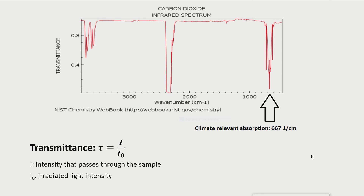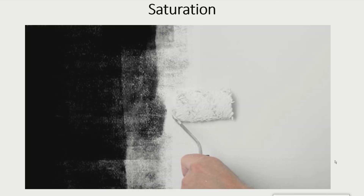Here we see an infrared spectrum of CO2 gas. The transmittance, tau, indicates the fraction of the irradiated light that can penetrate the sample. Tau equals the intensity of the light that penetrates the sample, I, over the irradiated light intensity, I0. According to modern climate science, the CO2 absorption at wave number 667 is mostly responsible for the anthropogenic greenhouse effect. To evaluate this claim, we will examine how the absorption of 15 micrometer infrared radiation depends on the CO2 concentration in the atmosphere. In this context, the phenomenon of saturation is of importance.